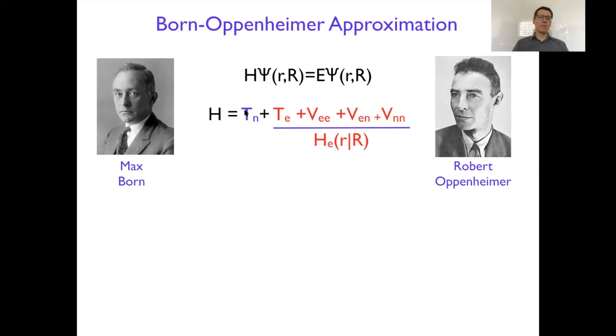And then the only part that doesn't go into the electronic Hamiltonian is the nuclear kinetic energy. There it's a differential operator with respect to the big R, so you cannot really make the parameters there.